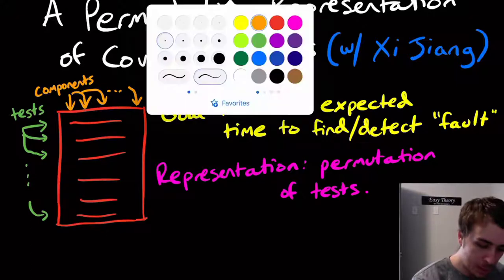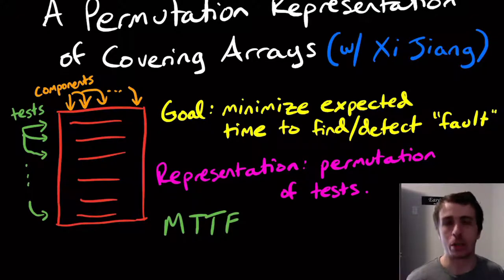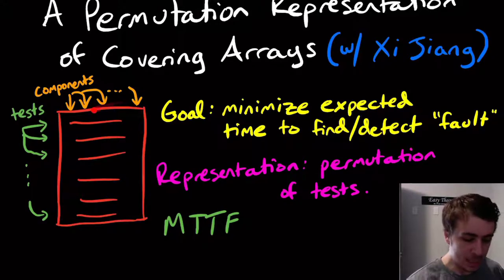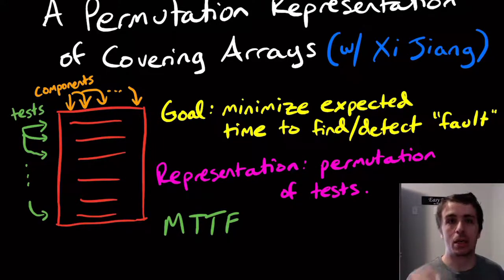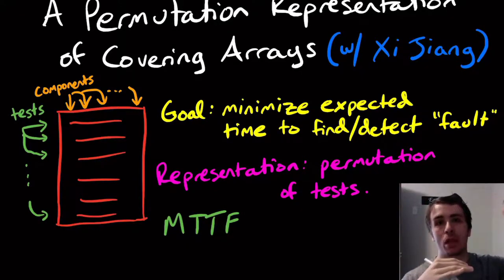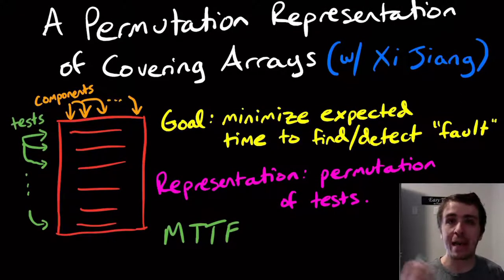The problem that we're trying to solve here is called mean time to failure, or MTTF — there are other terms for this. The mean time here is the average placement of interactions, so if we put a lot of interactions at the beginning, that will lower the mean time to failure. We were able to solve this problem and reduce the MTTF value of many covering arrays as a result.